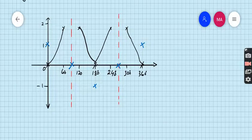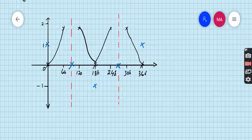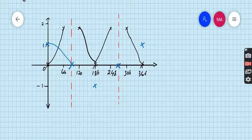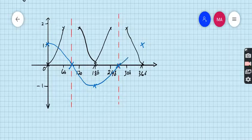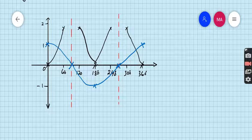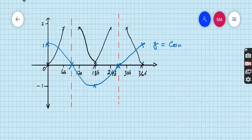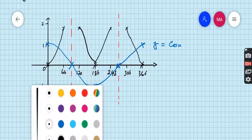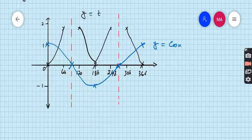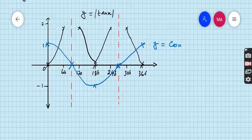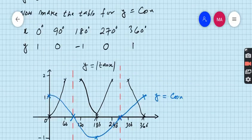Now join these points. So this is the graph of y equals cos x and the black one is the graph of y equals tan x. I hope you understand how to sketch two graphs, three graphs, in the same grid.